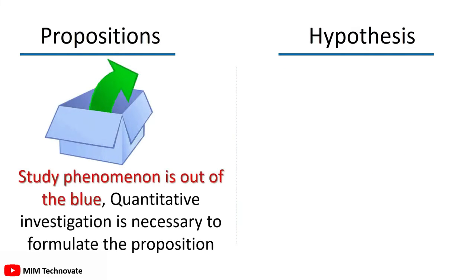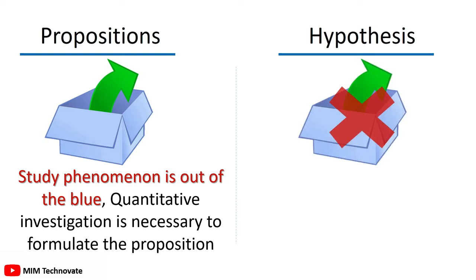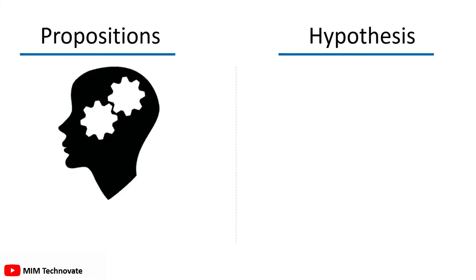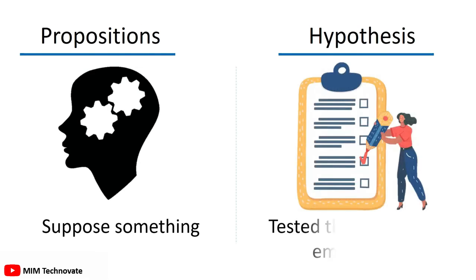In a proposition, if the study phenomenon is out of the blue, a quantitative investigation is necessary to formulate the proposition. Whereas in hypothesis, during quantitative research, hypothesis formulation is sufficiently provided that the study phenomenon is not out of the blue. A proposition is just like supposing something, whereas a hypothesis can be tested theoretically and empirically.